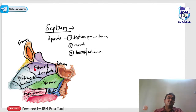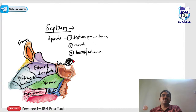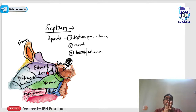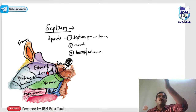Above the sphenoid lies the pituitary gland. In skull base surgeries for pituitary tumor removal, a posterior septectomy is done and the sphenoid wall is removed to enter the cerebral cavity. This is the transnasalendoscopic approach used for intracerebral surgeries to remove pituitary tumors.